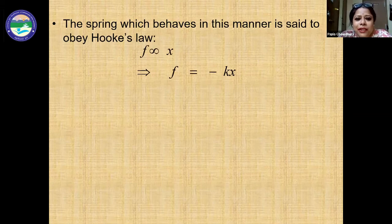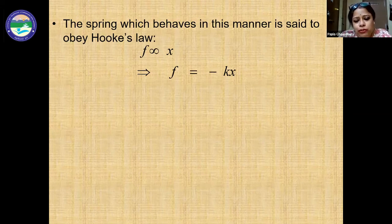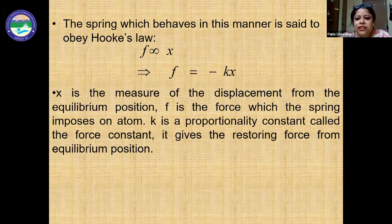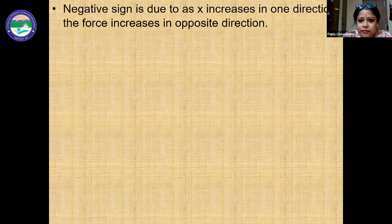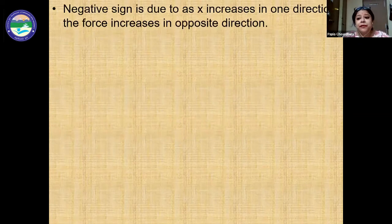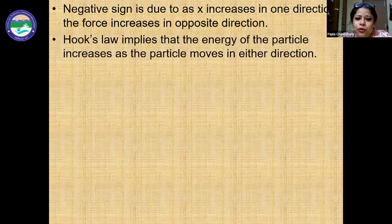In Hooke's law: F is proportional to x. If you apply more force you create more displacement; if you apply less force, less displacement. So F = −Kx, where K is the proportionality (spring) constant. The negative sign is because the direction of force and the direction of displacement are opposite. Hooke's law implies that the energy of the particle increases as the particle moves away from its equilibrium in any direction.